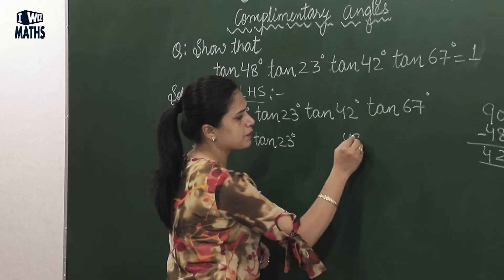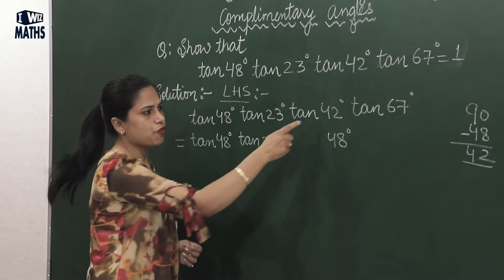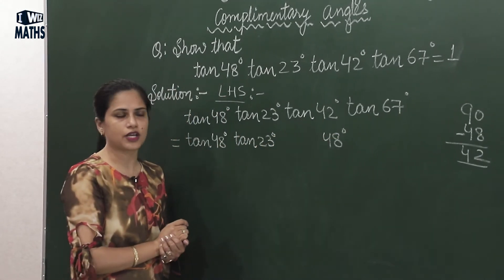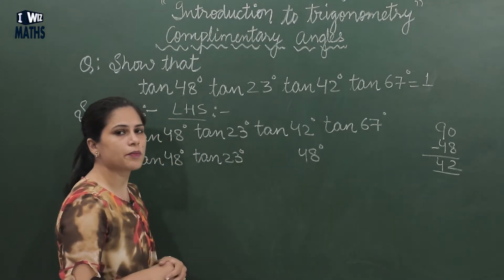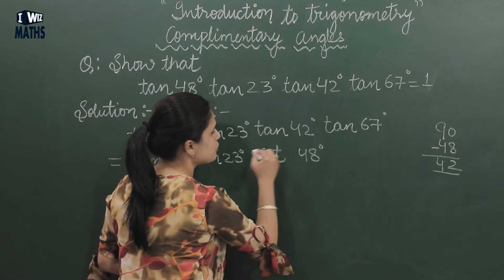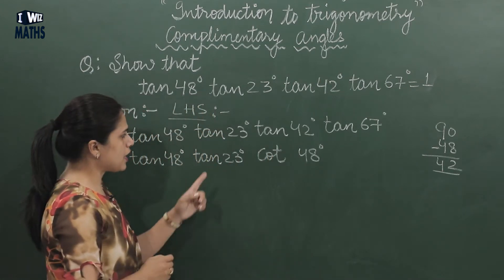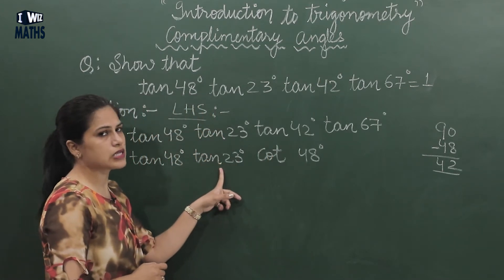For tan 42, I need to take it as 48 here, because 42's complementary is 48. If you've written its complementary, then tangent's complementary also needs to be written, and that becomes cot 48°.